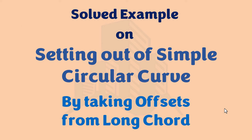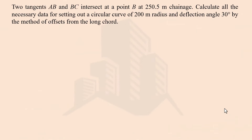Welcome everyone. In this video we are going to learn a solved example on setting out of a simple circular curve by taking offsets from the long chord. The problem states that two tangents AB and BC intersect at point B, and we need to calculate all necessary data for setting out a circular curve of 200 meter radius and a deflection angle of 30 degrees by the method of offsets from the long chord.